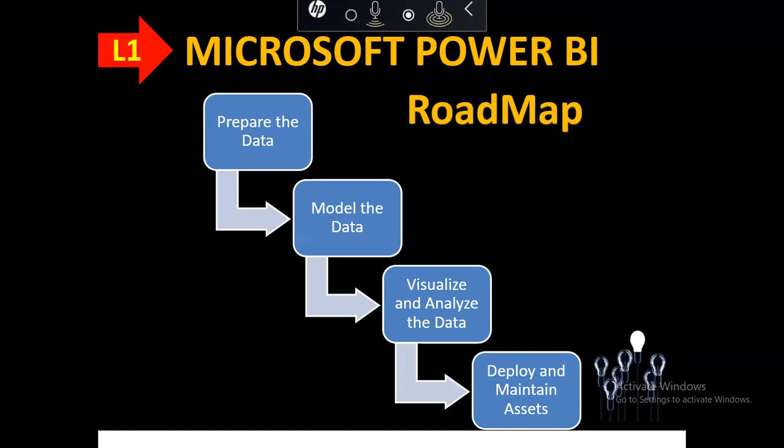The second module is to model the data — how many relationships we can use and how to structure the data in data modeling. The third module is to visualize and analyze the data, which is the main part, since Power BI is all about visualization, analysis, and analytics. The fourth module is to deploy and maintain assets — once we have built a product, we want to be able to use it anywhere.